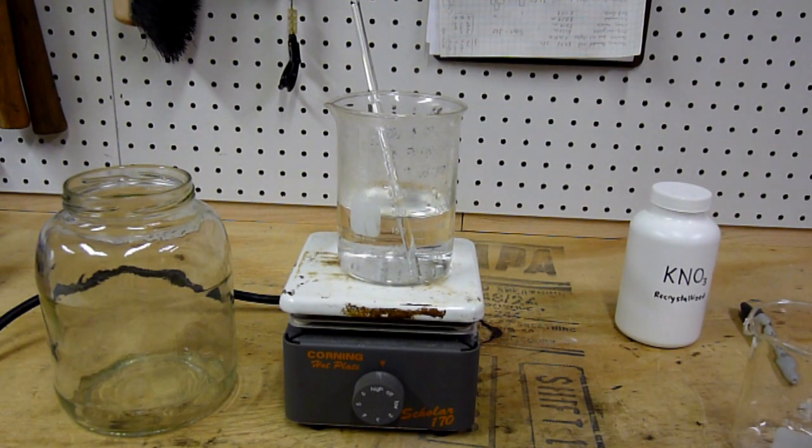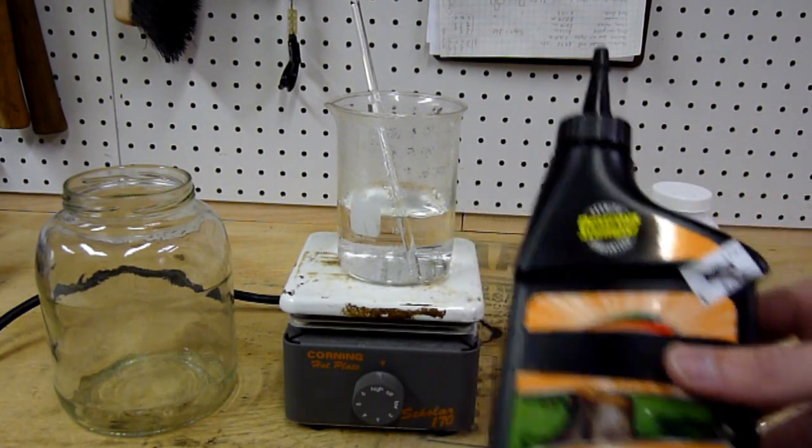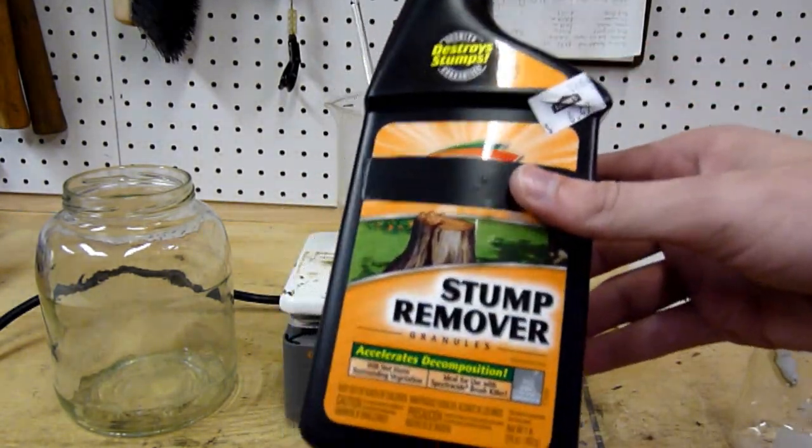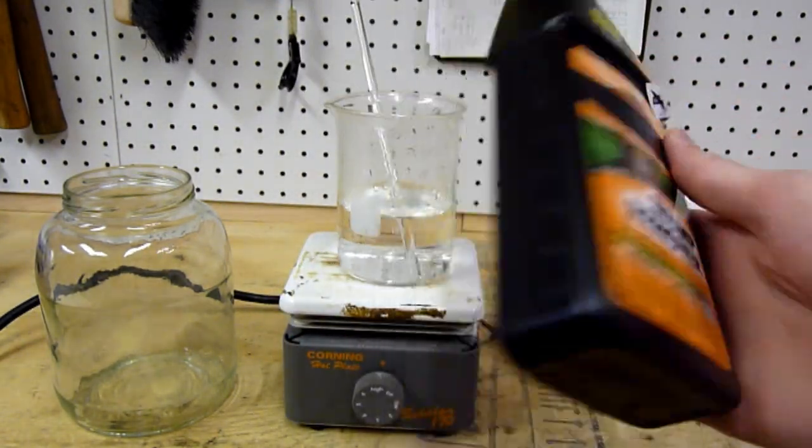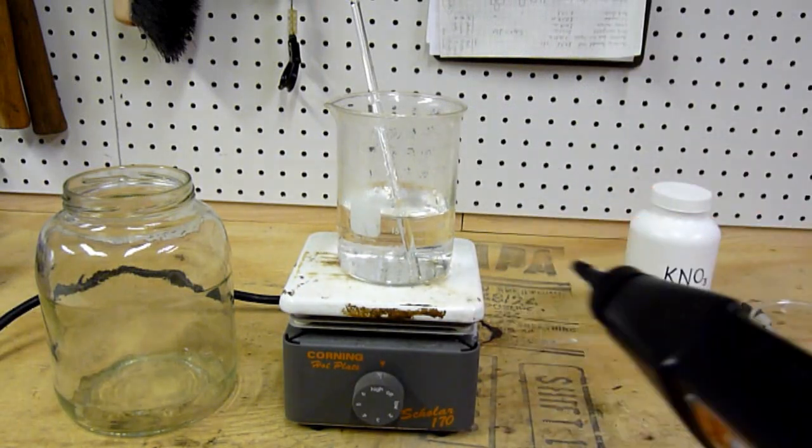So what I've prepared today is 200 milliliters of boiling water, and we're going to purify potassium nitrate found as stump remover in most hardware stores using the recrystallization method.